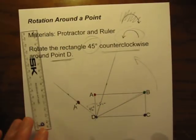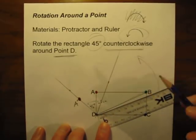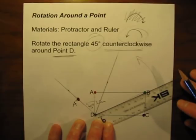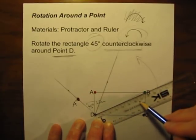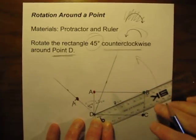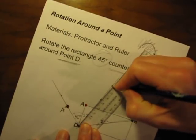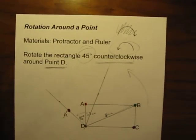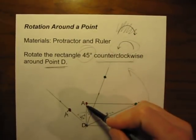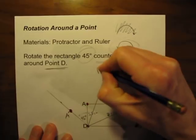Where exactly will point B be on that line? Whatever the distance is from D to B originally, we keep that same distance in the new rectangle. When I measure from B to D, it looks like 8 centimeters. So the distance from D to B prime, the new point B, is also going to be 8 centimeters. There's a little mark at 8 — and green goes to green with color coding. That is our new point B, officially called B prime.